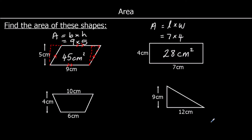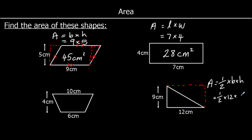For the triangle: a triangle is half of a rectangle, so the area of a triangle is half of the base times the height, or base times height divided by 2. The base is 12 and the height is 9, so it's half of 12 times 9. Half of 12 is 6, and 6 times 9 is 54. So the area is 54 centimetres squared.